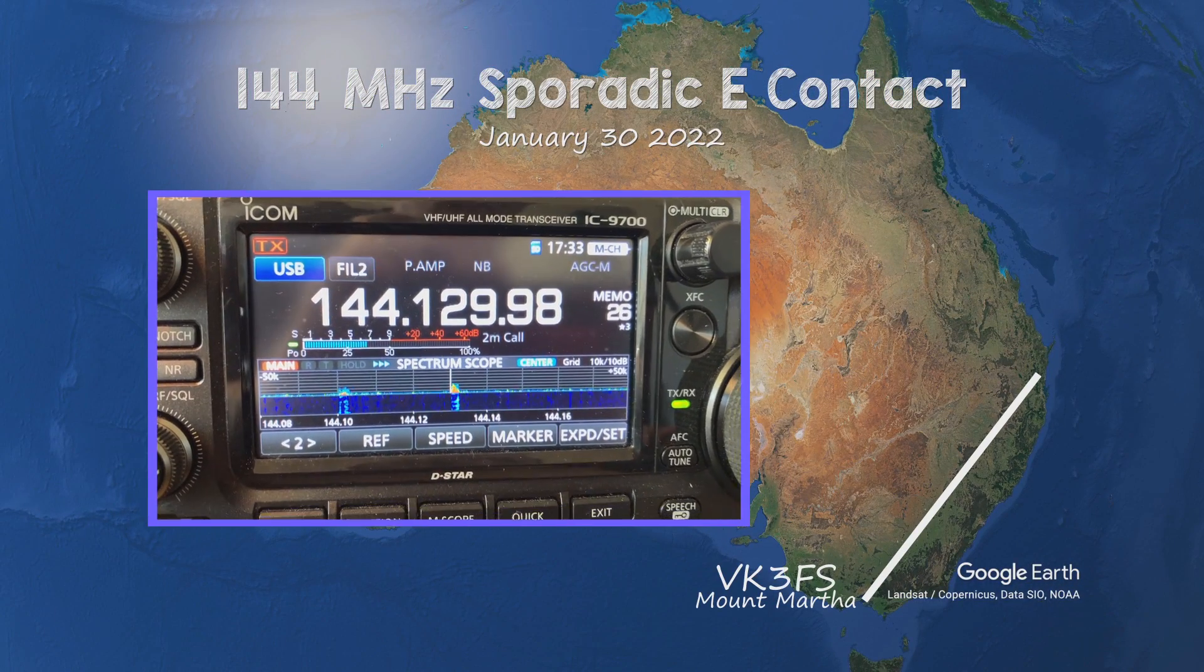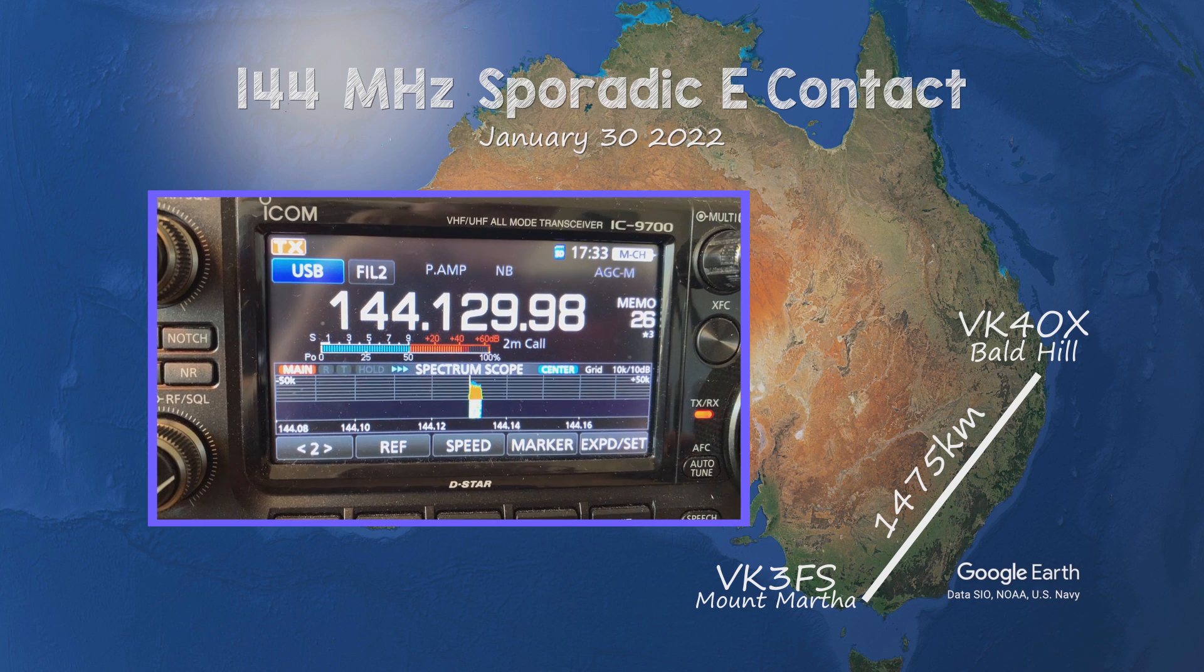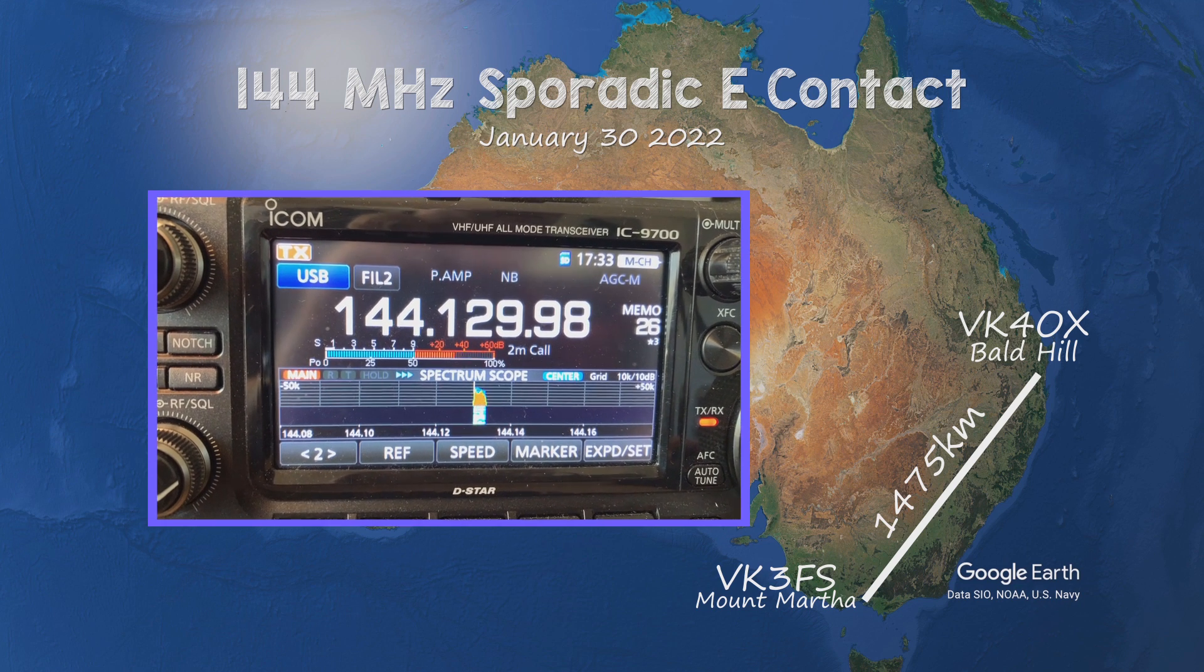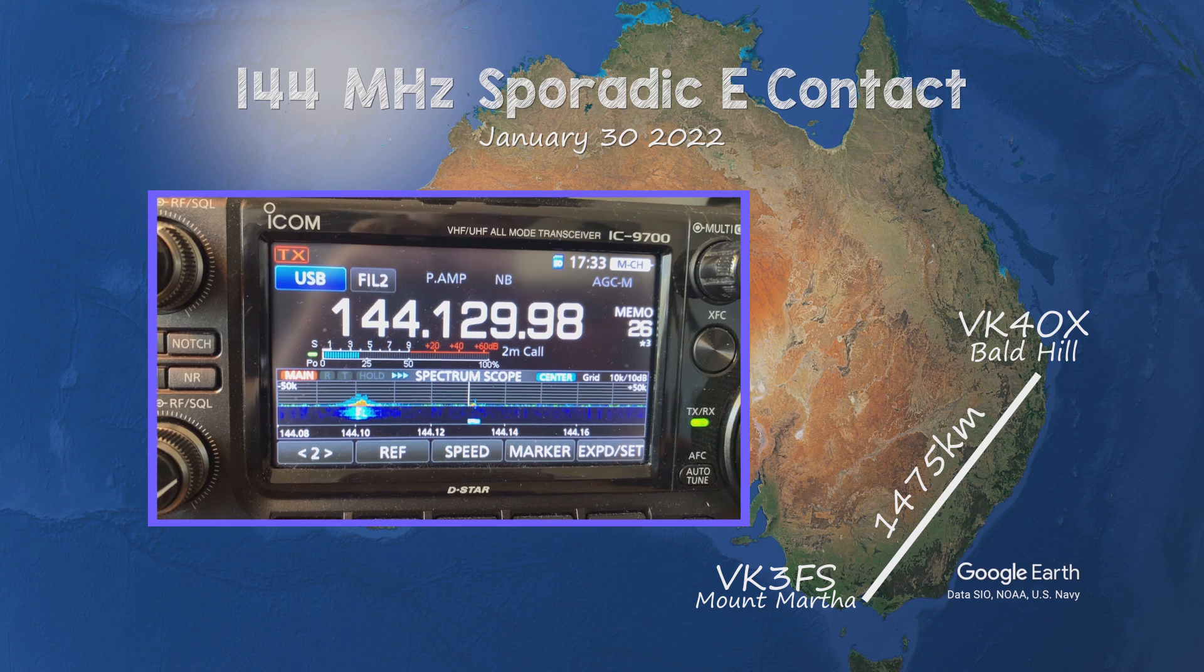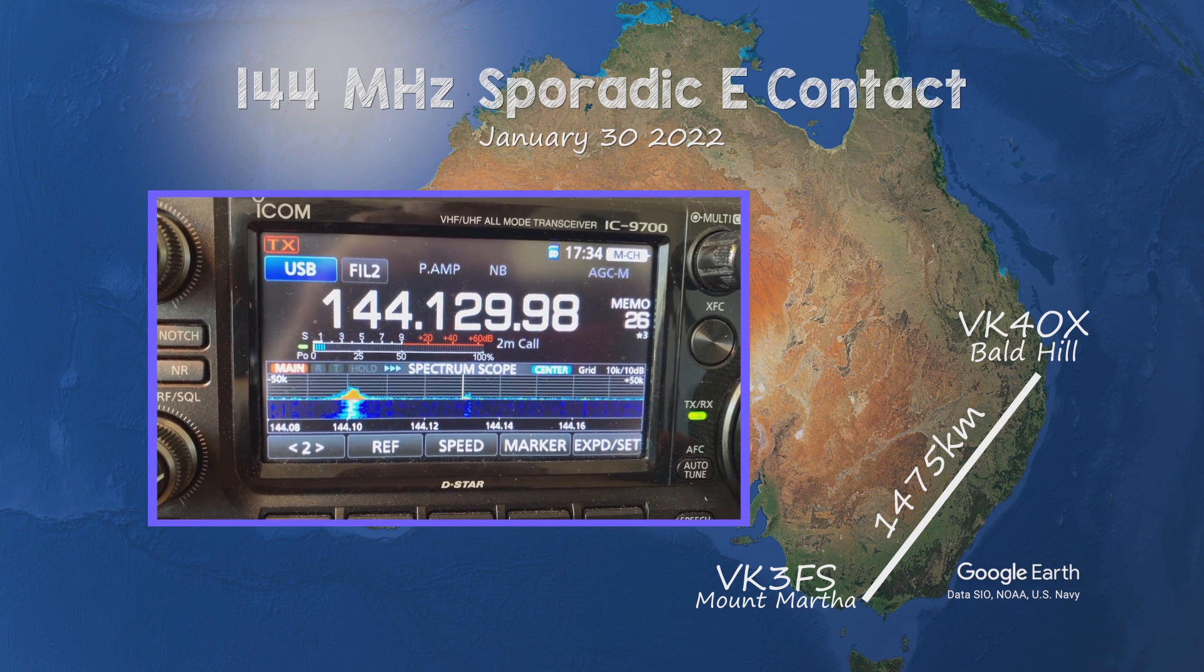VK3 Fox Sugar, roger. 5 and 9 into Mount Martha. The name's Andrew, VK3 Fox Sierra. Good Andrew, it's USL, you're also 59, VK3 Fox Sugar, VK4OX.